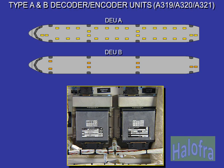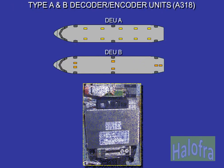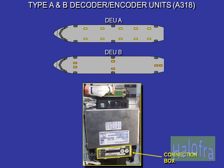Decoder encoder units, DEUs, type A and B, are located behind the cabin ceiling panels. On the A318, a new DEU generation is installed with a new connection box. The number of DEUs is reduced compared to the previous CIDS generation. Up to 17 type A DEUs plus 1 in spare can be installed in the cabin, 10 in typical configuration. Up to 6 type B DEUs can be installed, 4 in typical configuration.